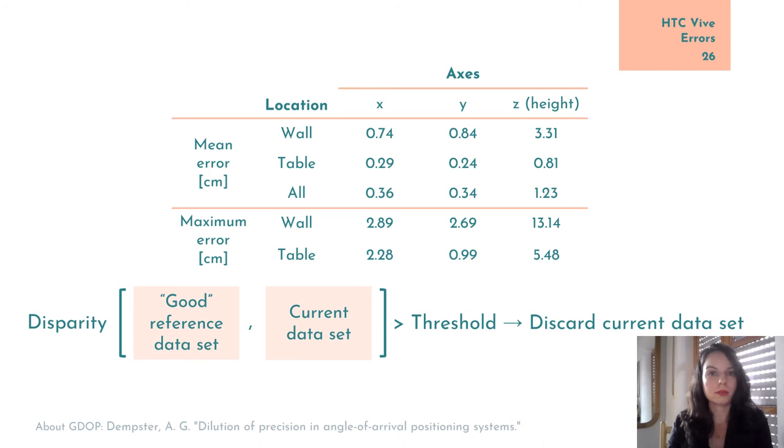Note also that the ultrawideband systems have higher accuracy than most anchor-based wireless localization systems. For instance, WiFi or Bluetooth-based ones usually have errors in the range of meters.